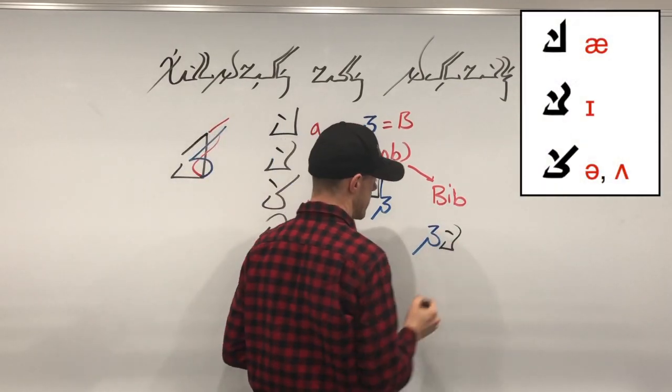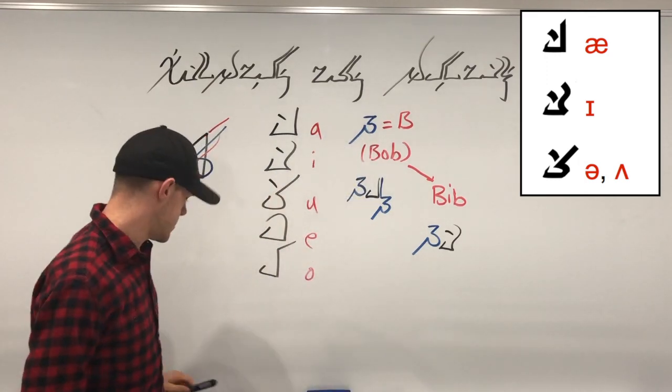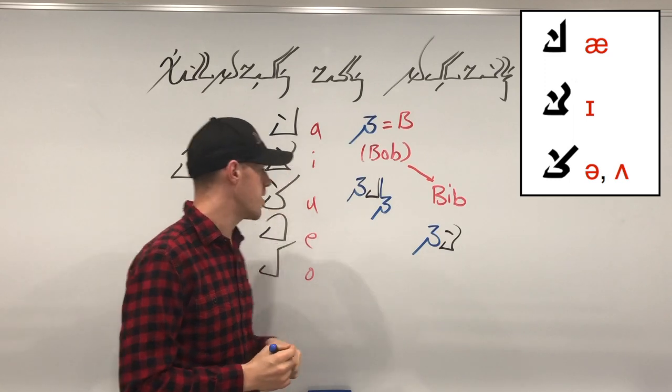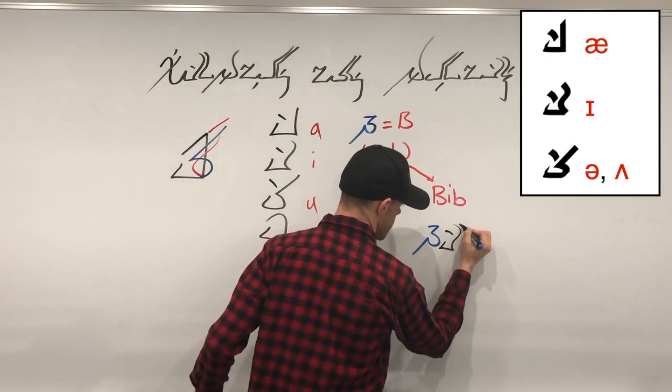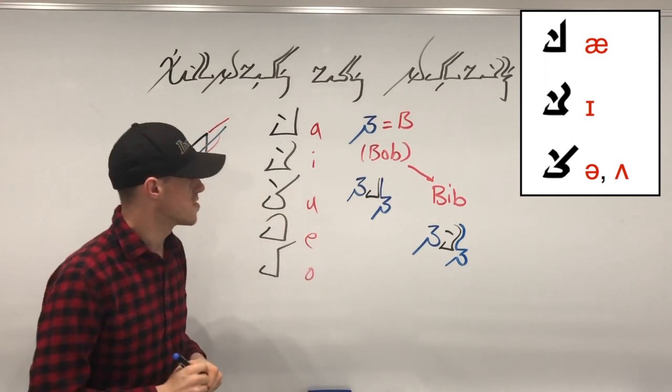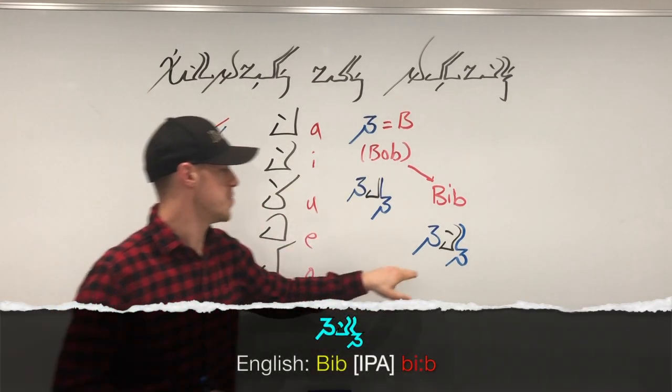And using the same rules that I used when writing Bob, I mirror that stem and then write the consonant. So there you have it, Bob and bib.